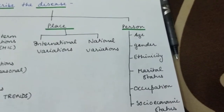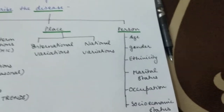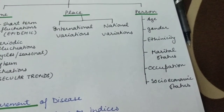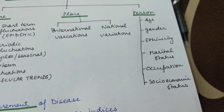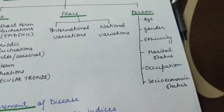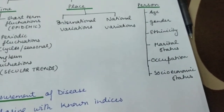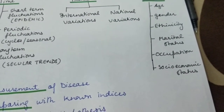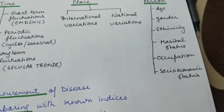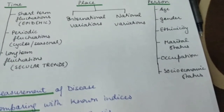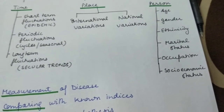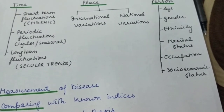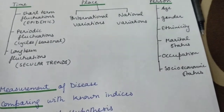Person-wise variations start with age — certain diseases occur at particular ages. Measles occurs in children; rubella shows a bimodal peak, occurring in children under three and again in those aged 10–16 years. Hodgkin's lymphoma also shows a bimodal peak — below 35 years and above 50 years. Serious diseases tend to occur in older age groups. Regarding gender, snake bites, road traffic accidents, and gonorrhoea are more common in males, while chronic bronchitis and thyroid disorders are more common in females. Certain diseases are also linked to ethnicity.